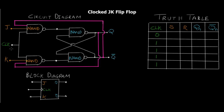Let's see the different cases and construct a truth table. Case one: clock equals zero. When the clock is zero, whenever one of the inputs of any NAND gate is zero, the output is always going to be one. That's the truth table of the NAND gate — the output of a NAND gate is always high if any of the inputs is zero.